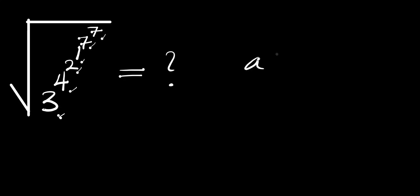This expression is in the form of a^b^c^d and so forth. If you have something of this nature, what you simply do is start from the top and go downwards. So the first two numbers here are simply 7 power 7.